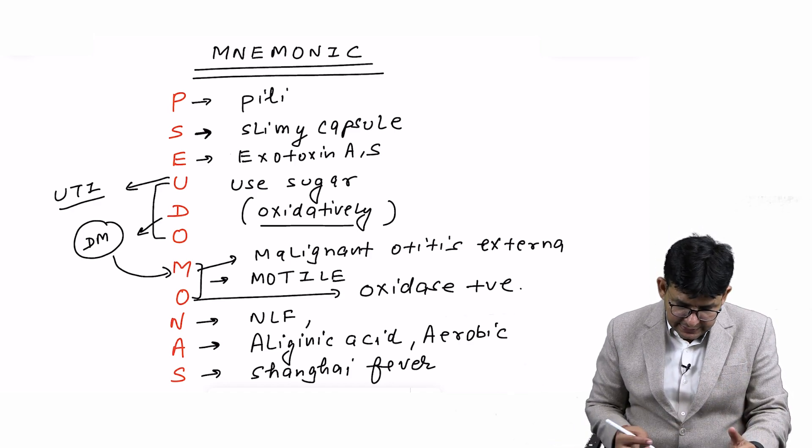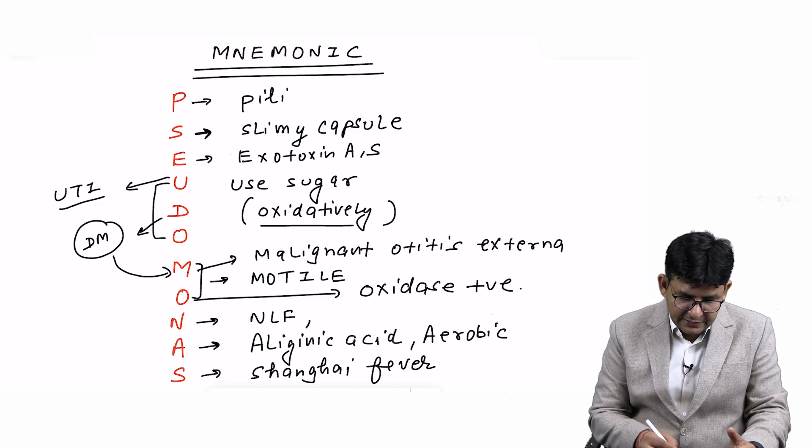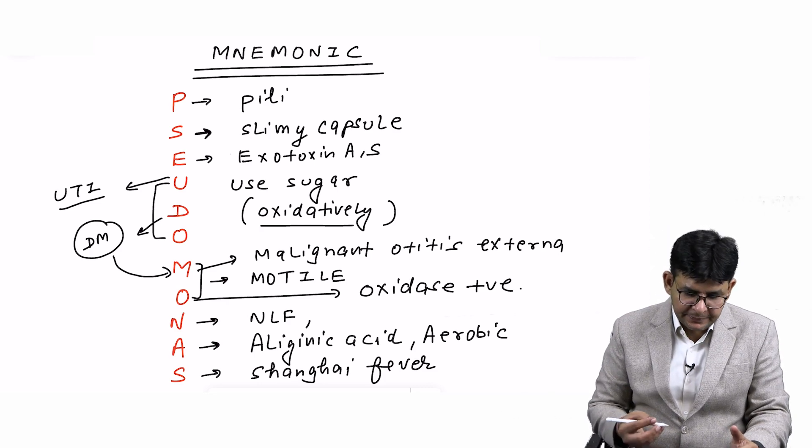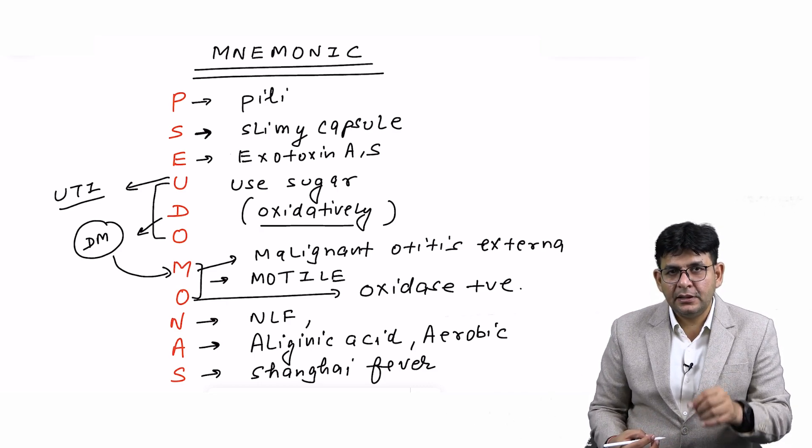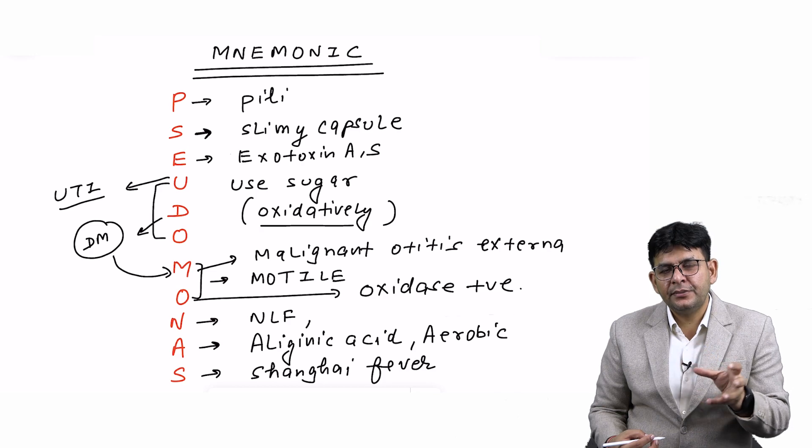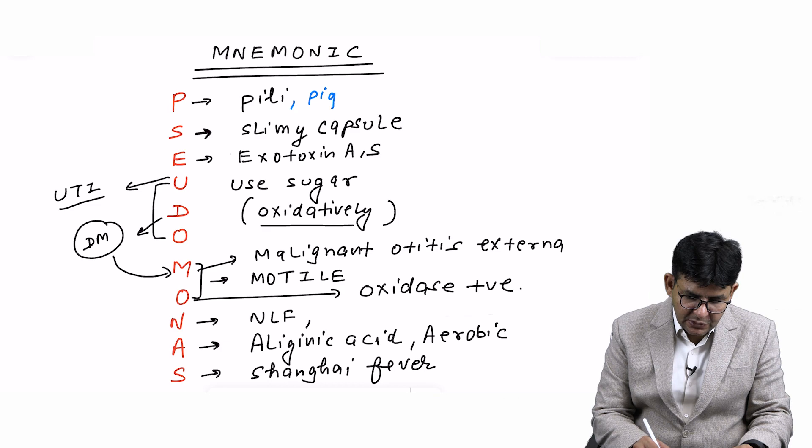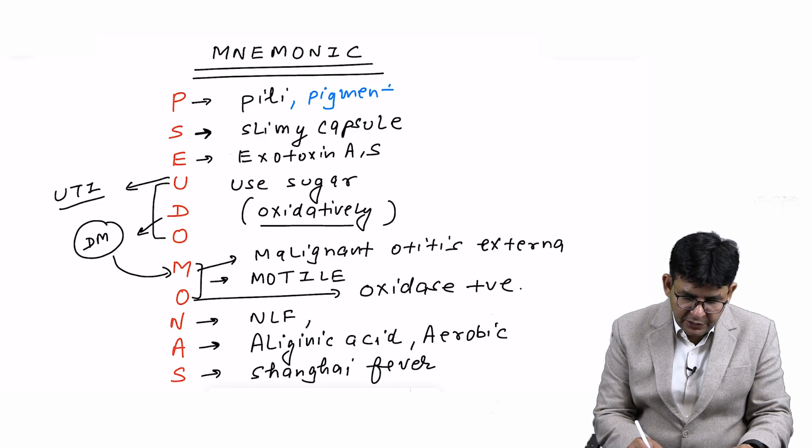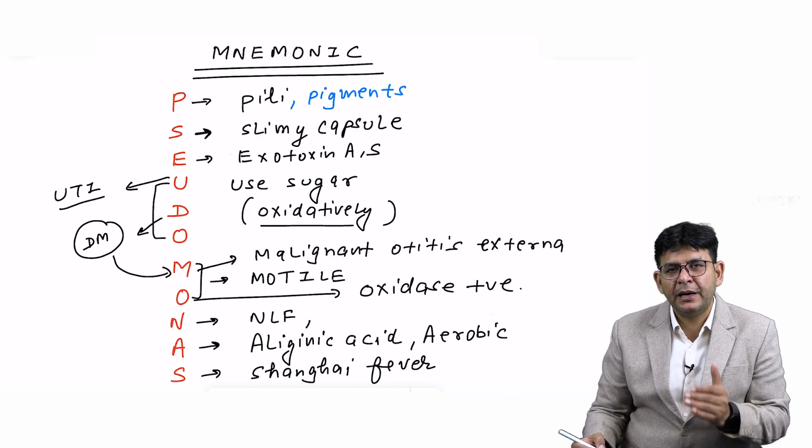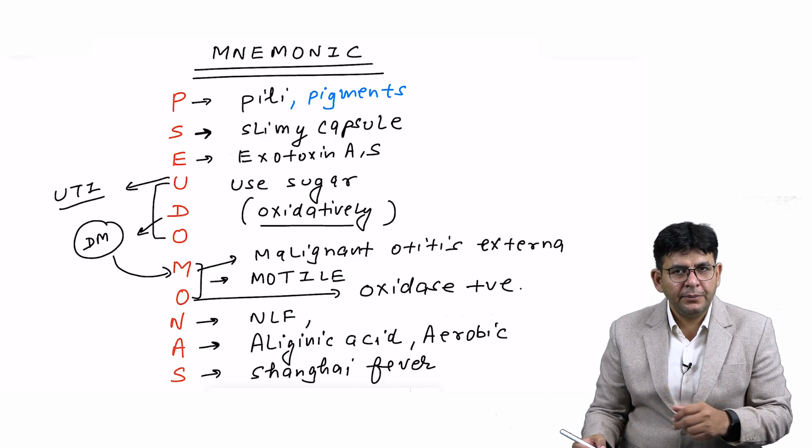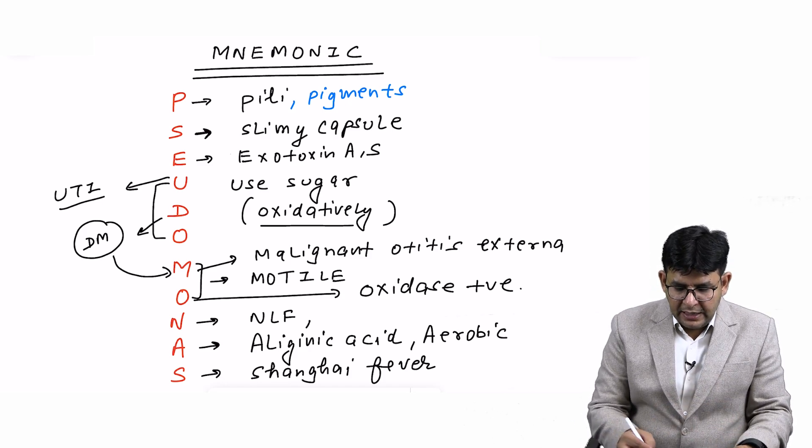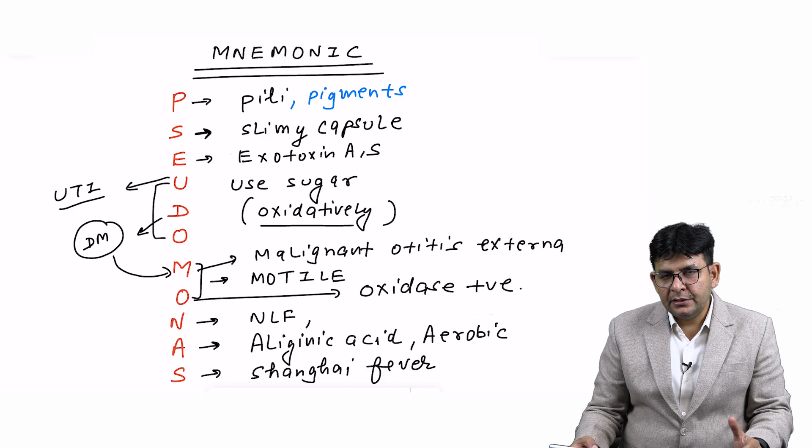Starting with P: P stands for pili for attachment to surfaces. Along with pili, remember the pigments. As you already know, it has pigments: pyoverdin, pyorubrin, pyomelanin, and the most important one is pyocyanin, which is bluish, and pyoverdin is green.